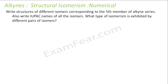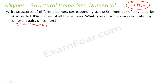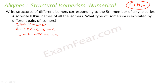Let's work a numerical: write all structures for the 5th member of the alkyne series. The 5th member is C₆H₁₀ (6×2−2=10). With a straight 6-carbon chain, the triple bond can be at position 1, 2, or 3 — giving hex-1-yne, hex-2-yne, and hex-3-yne. Positions 4 and 5 would be equivalent to positions 2 and 1 respectively, so only 3 straight-chain isomers.